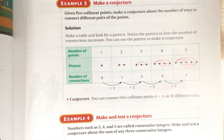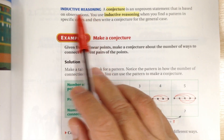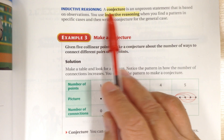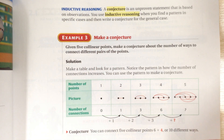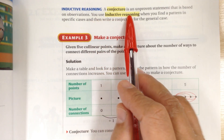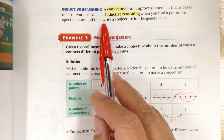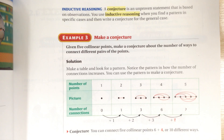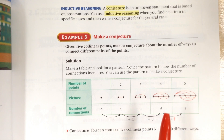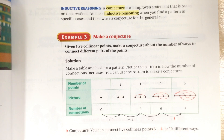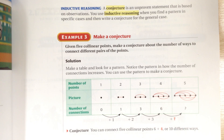Now let's look at the definition. A conjecture is an unproven statement that is based on observation. You use inductive reasoning when you find a pattern in specific cases and then write a conjecture for the general case. One important thing: inductive reasoning does not guarantee the answer is correct. Most of the time it is correct, but in some rare cases you may end up with a wrong conclusion, so be aware of that.